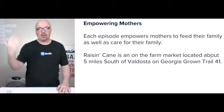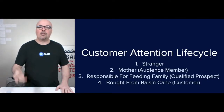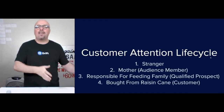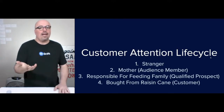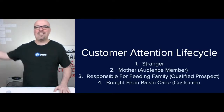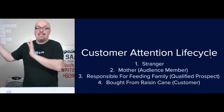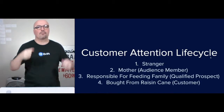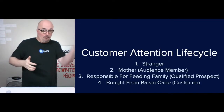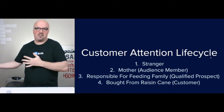The other part is making sure people understand the brand awareness thing — what Raisin Cane is, where it is. The customer attention life cycle: the basic idea is everybody starts as a stranger and then they identify themselves as a mother with a family that they're responsible for feeding, needing educational and interesting stuff for the kids on the weekends or during the summer. Some mothers are going to qualify themselves by saying, 'I'm responsible for feeding my family and either I want you to ship me something or I live close enough to use the brick-and-mortar location.' That person now becomes a qualified prospect, and then they'll make her an offer and she either decides to become a customer or she doesn't.